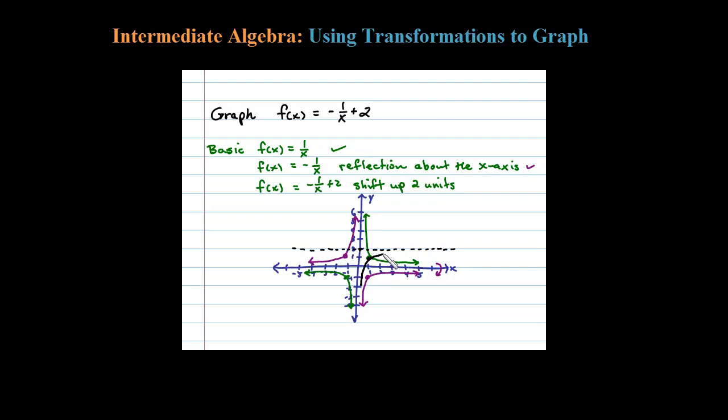And the graph for that would look something like this. And this point, when I shift it up 2 units, will give me a point there. Remember, both of these sides here are asymptotic to the y-axis.